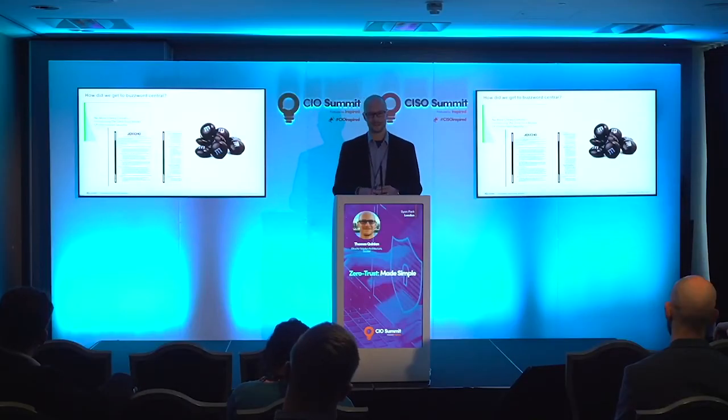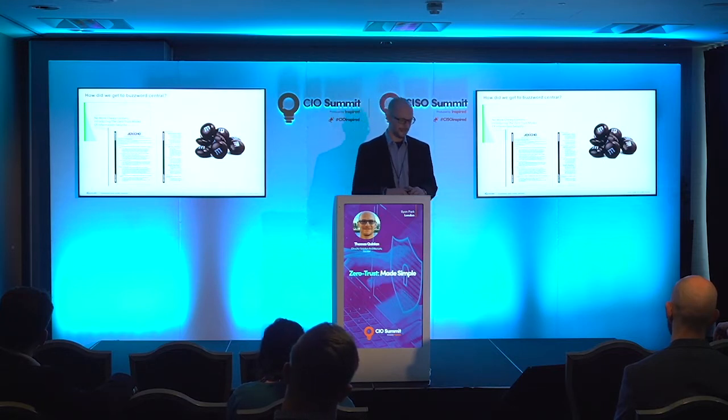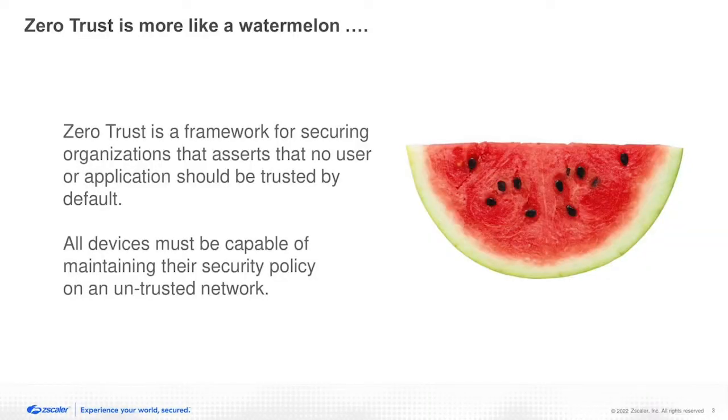Those commandments — number five specifically — say that any device should be able to maintain its status on an untrusted network. It has to remain secure even if the actual network that it's on is not secure. Getting back to the food analogy, things start to get a little bit weird because how do you represent something that is both disparate and together? I think of it as a watermelon, which will take some explaining, which is what I'm going to attempt to do now.